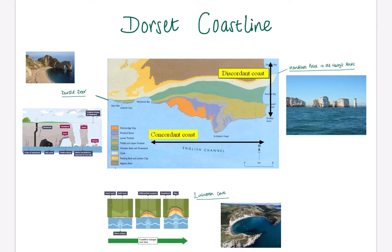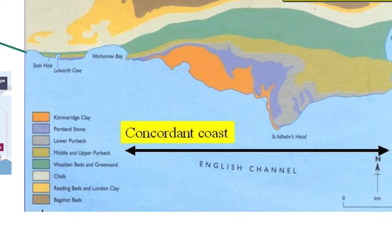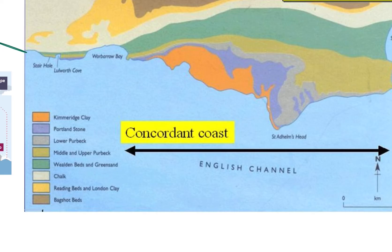On the screen here you can see a map of the Dorset coastline. Now with the Dorset coastline, we can classify this as two different types of coast. The first type we have is our concordant coast. This means that our different rock types lie parallel to the coast. We can see that in the diagram — for example, we've got Kimmeridge clay in the orange colour, then stacked behind that we've got the Portland stone in the purple, and then lower Purbeck in that slightly grey colour. So all of our geology changes the further we move inland.